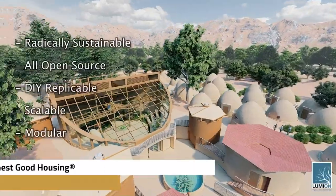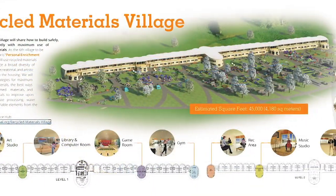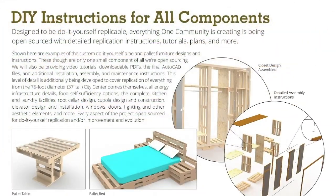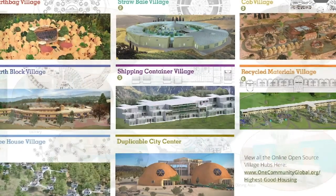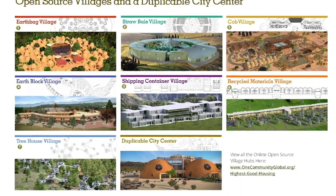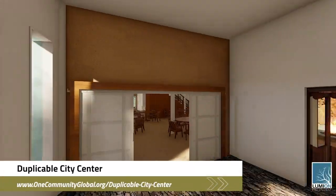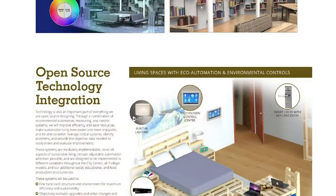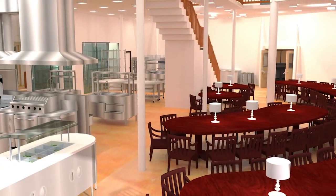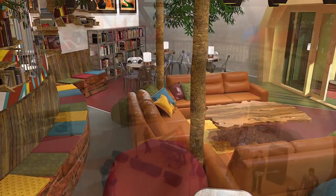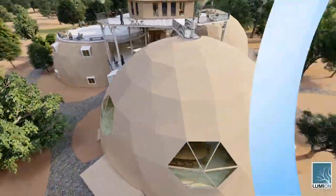The One Community approach to Highest Good Housing is eco-artistic home building that is affordable, sustainable, do-it-yourself duplicable, resource and space efficient, and consists of seven different sustainably constructed village models. One Community is also creating an open source duplicable city center designed to be LEED Platinum certified, provide 12 guest rooms, dining for over 150 people, and laundry and recreation space for over 300 people — all while saving money, time, space, and resources.